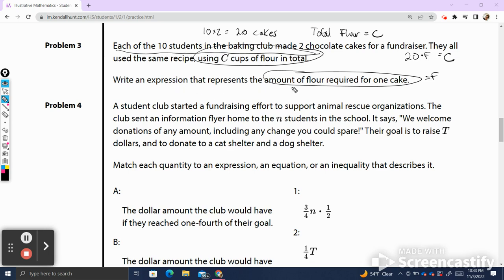We already know that the total flour is equal to C. Now we want an expression that represents the amount of flour required for one cake. So I'm going to get the F by itself. So I'm going to divide by 20, and that gives me F is equal to C over 20. The amount of flour required for one cake is the total amount of flour we have divided by the 20 cakes that were made. Let's get going to the next question.